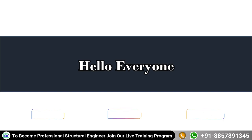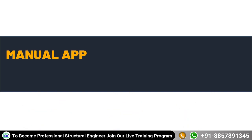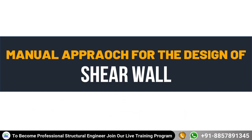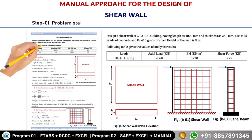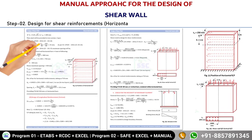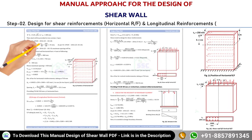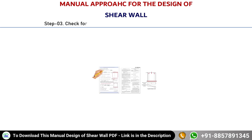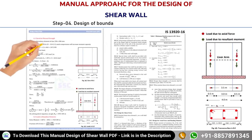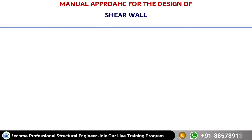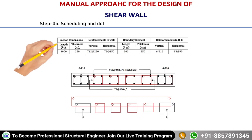Welcome back. In this video we are going to see the manual approach for the design of a shear wall. We will solve this complete problem in five important steps: first, the problem statement and classification of the wall section as per IS 13920:2016; second, design for shear and longitudinal reinforcement; third, check for the necessity of boundary elements; fourth, design for the boundary element for flexure and shear; and fifth, scheduling and detailing of the shear wall.